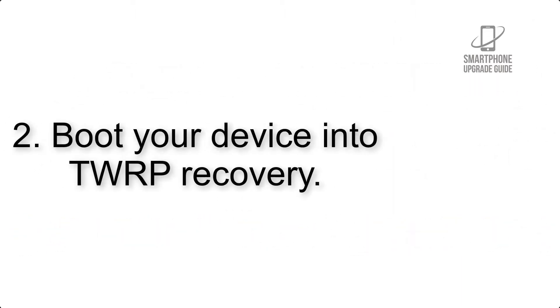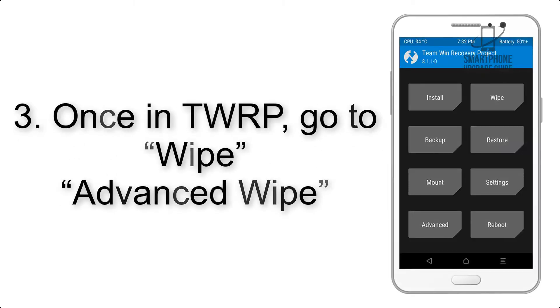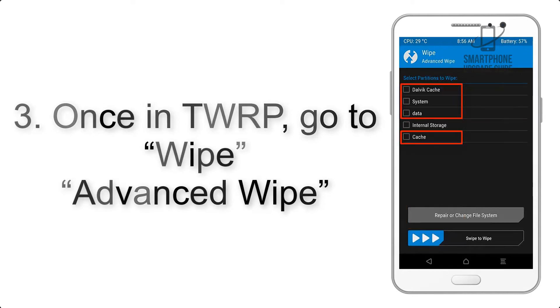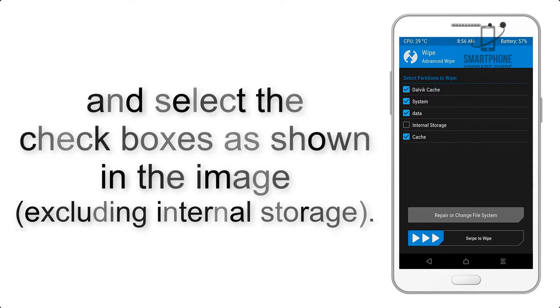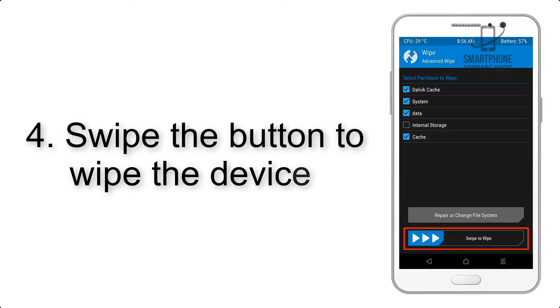Step 2: Boot your device into TWRP recovery. Once in TWRP, click on Wipe, then Advanced Wipe, and select the checkboxes as shown in the image, excluding internal storage.